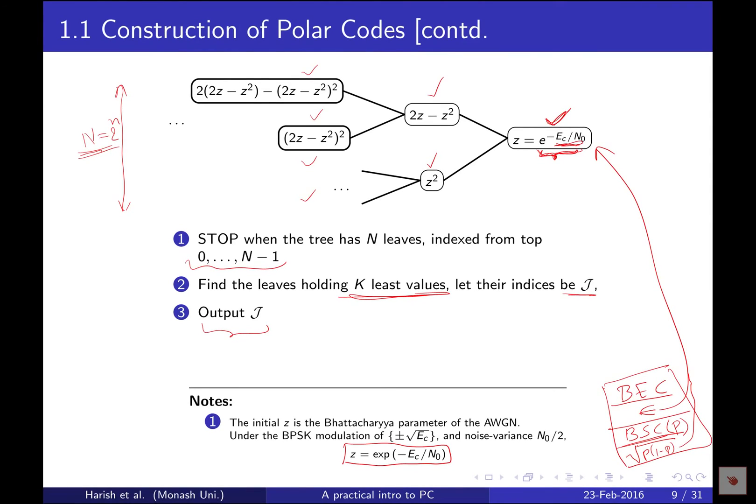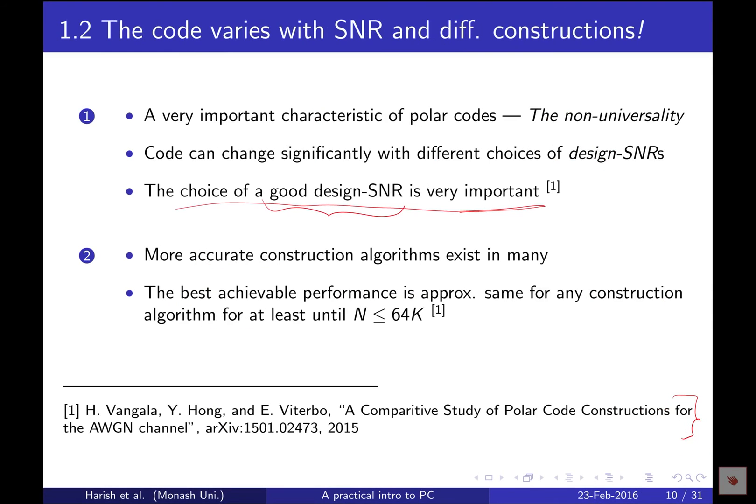Several things need discussion. The code varies with SNR. There are many algorithms available for code construction. Each construction with different initials will generate different codes. What is best? This is answered in this paper in the footnote. The choice of a good design SNR is very important, much more important than the choice of construction algorithm.